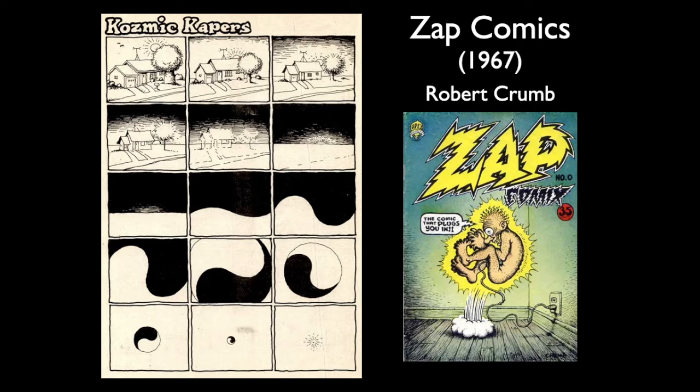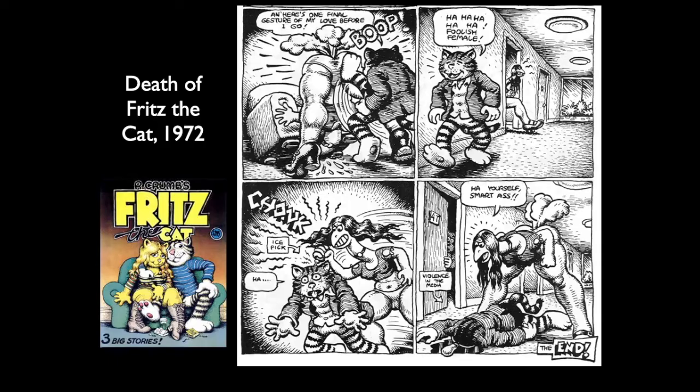Inside number zero, which was intended to be the original ZAP comics, we see 'Cosmic Capers' — a metamorphosis of a suburban landscape turning into a yin yang symbol, or what's known in China as Tai Chi or the Supreme Ultimate, and it vanishes into nothing. These psychedelic comics Robert Crumb sold on the street. He literally had a baby pram that he pushed up and down, and for 35 cents, hippies could have a little entertainment with their weed.